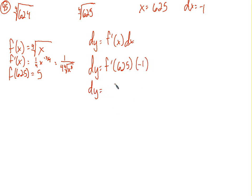So dy is equal to... Well, here's our f prime. 1 over 4 times... It might be easier to look at it this way. The 4th root of 625 first, then take that to the 3rd. They're the same thing. We should know that. Times negative 1 times dx.